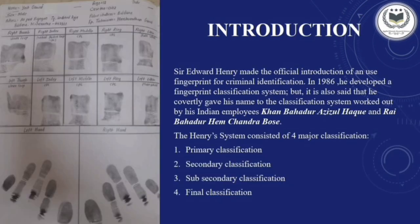Starting with the introduction, fingerprints are the impressions left by our fingers on any surface in contact. These fingerprints are unique as well as classifiable. Because of these unique characteristics, Sir Edward Henry made the official introduction and use of fingerprints for criminal identification in 1896. He also developed a fingerprint classification system, though it is said he covertly gave his name to the system worked out by his Indian employees Khan Bahadur Azizul Haq and Rai Bahadur Hem Chandra Bose. This system helped in classifying fingerprints, for which a fingerprint card is required as shown on the slide.